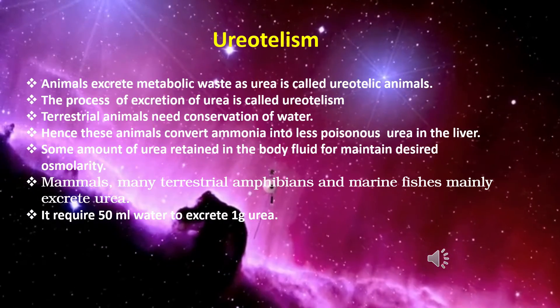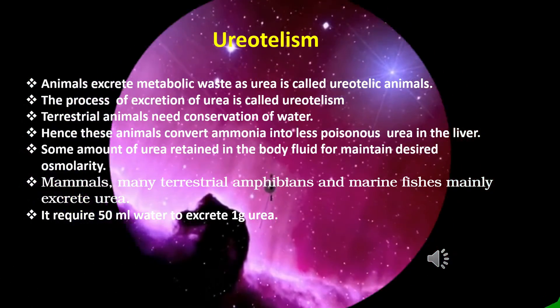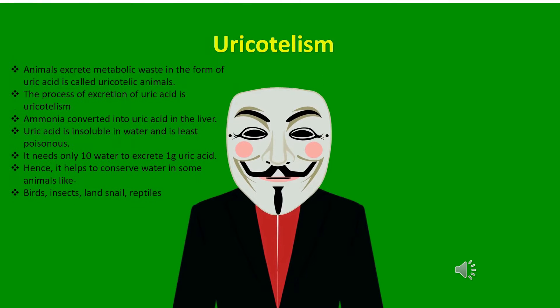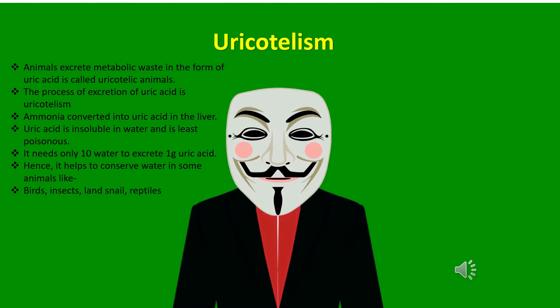Animals that excrete metabolic waste in the form of uric acid are called uricotelic animals, and the process is called uricotelism. Ammonia is converted into uric acid in the liver. Uric acid is insoluble in water and is the least poisonous. It needs only 10 milliliters of water to excrete 1 gram of uric acid, hence it helps to conserve water. Chondrichthyes fishes retain urea in the body fluid to maintain osmotic balance.